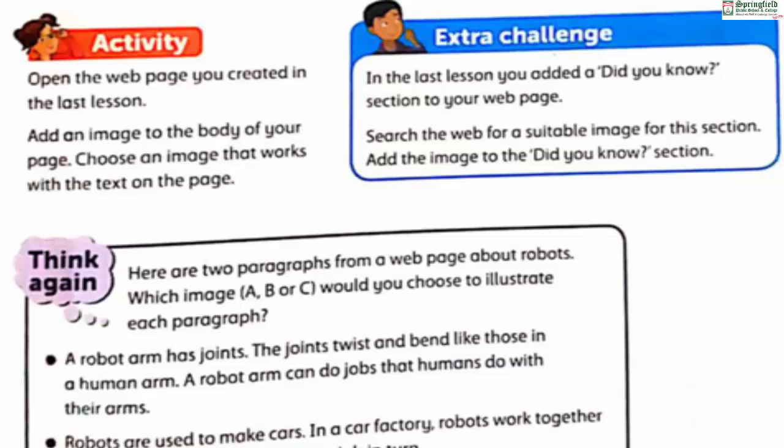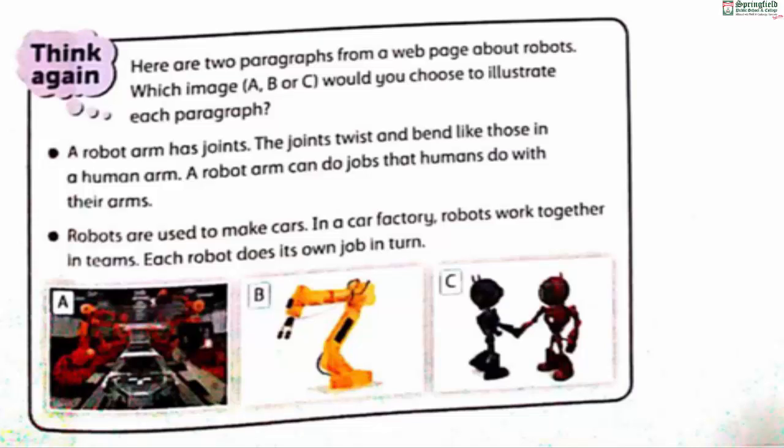The 'Think Again' dialog box presents two paragraphs from a web page about robots. You must choose which image — A, B, or C — illustrates each paragraph. Paragraph one: 'A robot arm has joints; the joints twist and bend like those in a human arm. A robot arm can do jobs that humans do with their arms.' Paragraph two: 'Robots are used to make cars in a car factory; robots work together in teams and each robot does its own job.'